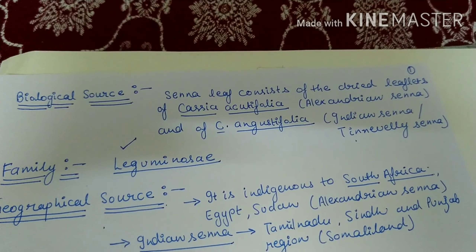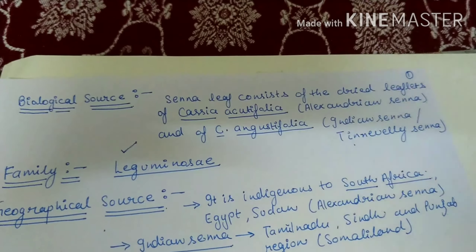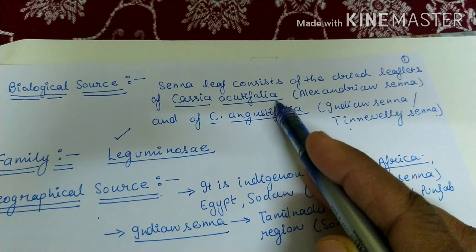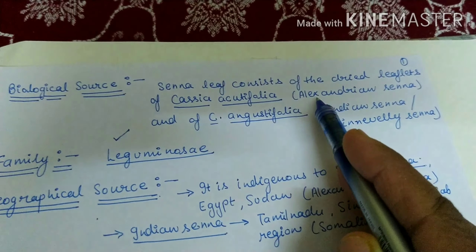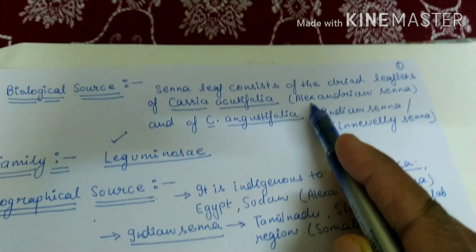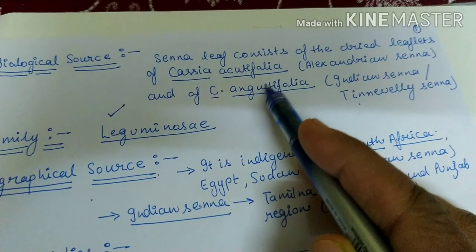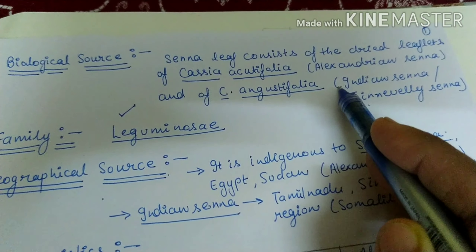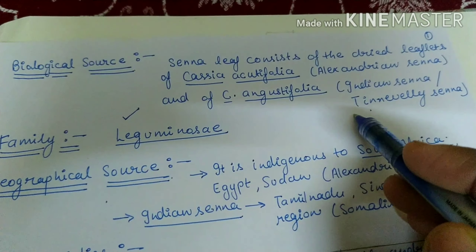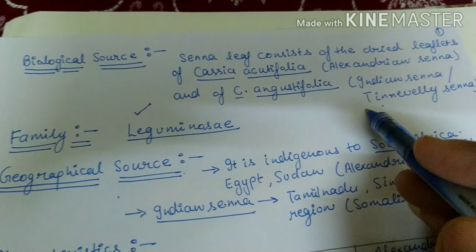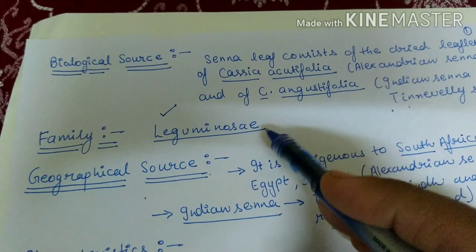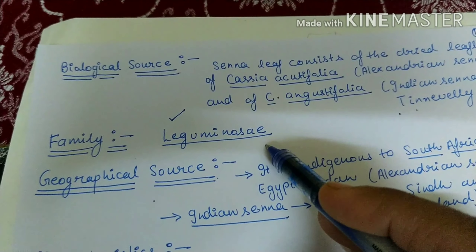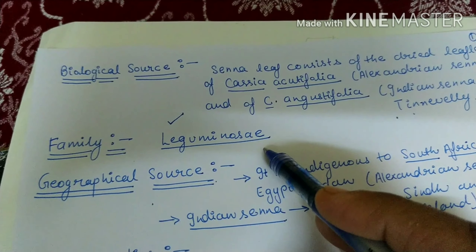Senna leaflet consists of dried leaflets of Cassia acutifolia, also known as Alexandrian Senna, or Cassia angustifolia, also known as Indian Senna or Tinnivalli Senna. The Senna family is Leguminosae.